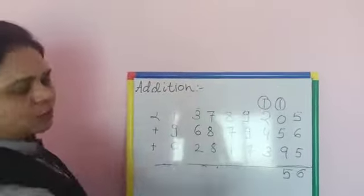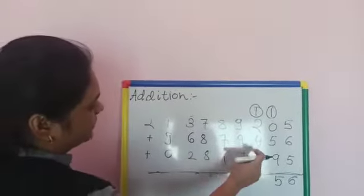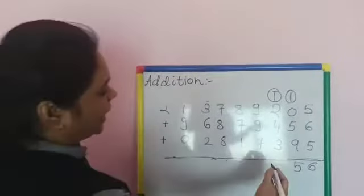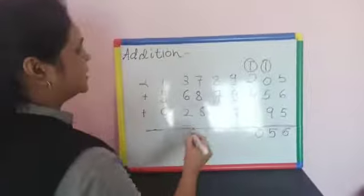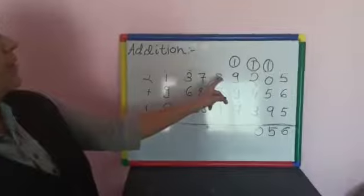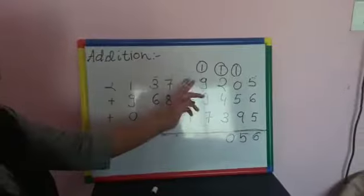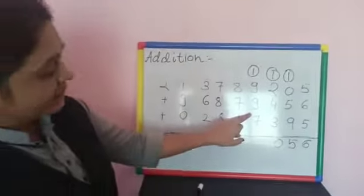Then 1 plus 2 is 3. 3 plus 4 is 7. 7 plus 3, how many? 10. Then 0 is here, 1 is carry over. Now, 1 plus 9 is 10. 10 plus 9 is 19.